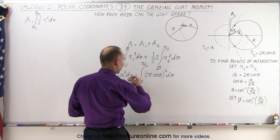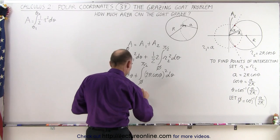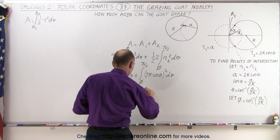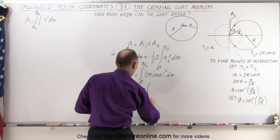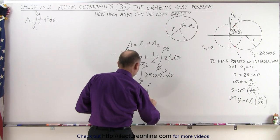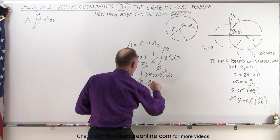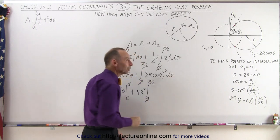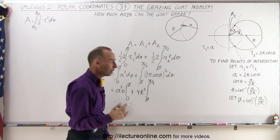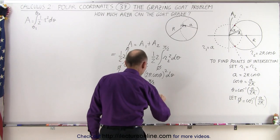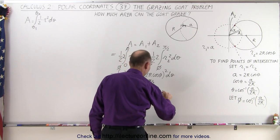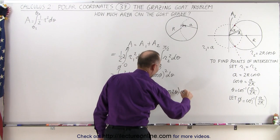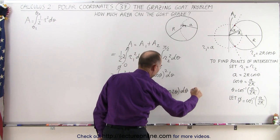...plus, factoring out (2R) squared = 4R squared, times the integral from φ to π/2 of cosine squared dθ. The cosine squared can be written as one-half times (1 + cos 2θ) dθ.